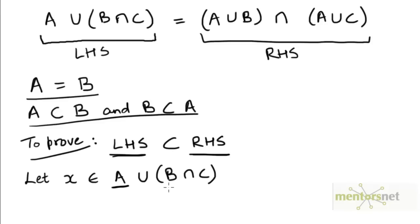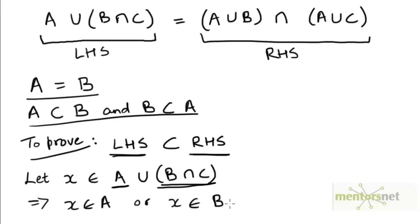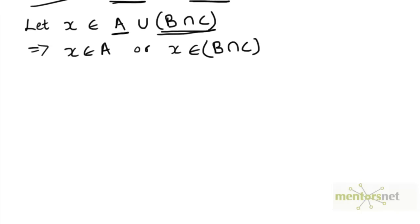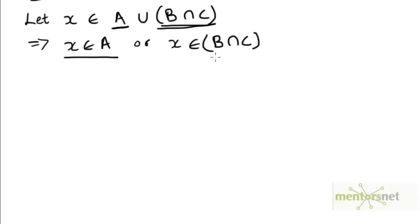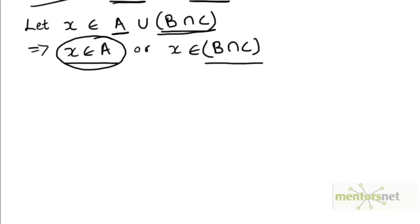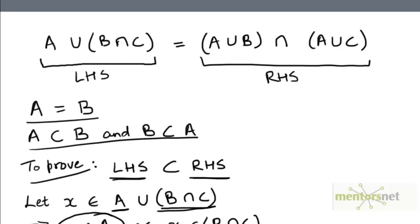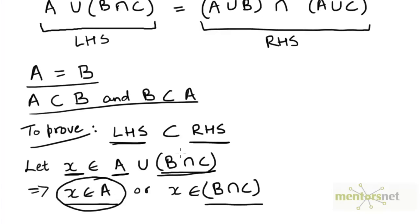Since x belongs to the union of these two sets, it must be an element of at least one of them. So either x is an element of A, or x is an element of B intersection C. It's also possible that x belongs to both, but it must belong to at least one. So let's consider these two possibilities separately. Let's first consider the case where x is an element of A. Can we prove that x is an element of the set on the right hand side?